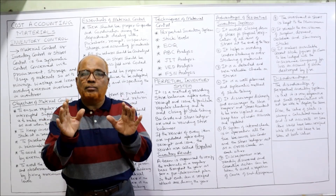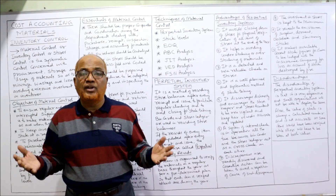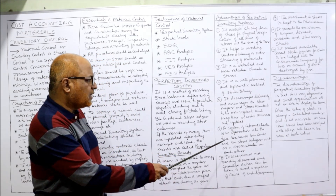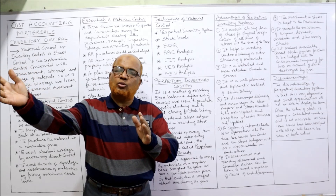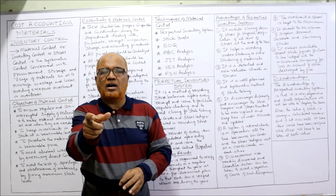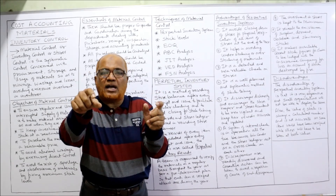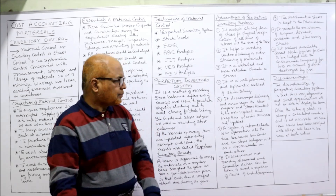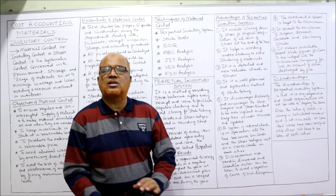Another advantage is that the internal check system is in operation at all times, because bin card and stores ledger cross-check each other. Whenever there is a movement of material — receiving or issuing — the transaction is recorded in both the bin card and the stores ledger, creating an automatic cross-check since the same transaction is recorded independently by the storekeeper and the cost accountant. Discrepancies are readily discovered and corrective action can be taken to avoid repetition.